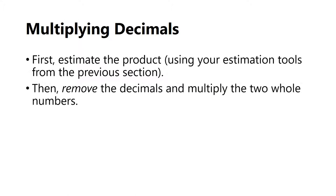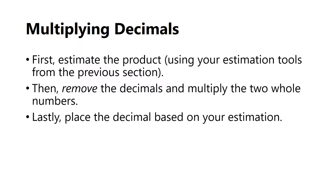Then you want to remove the decimals and multiply the two whole numbers as if they never included decimals at all. And lastly, we're going to look back at our estimation and figure out where we should put the decimal based on our estimation. Let's try it out.